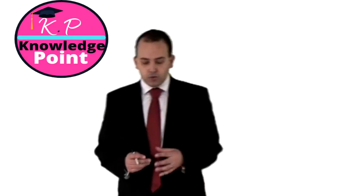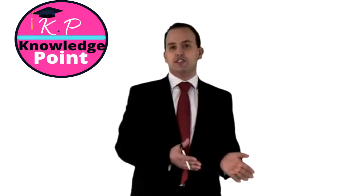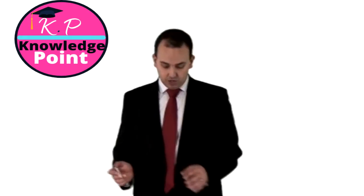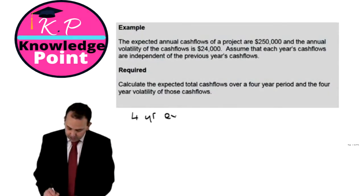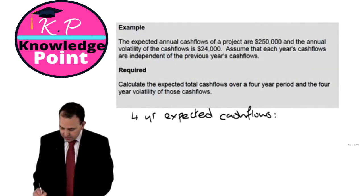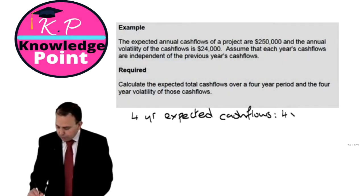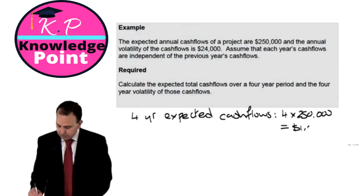First of all, if the annual cash flows are expected to be $250,000 each year and we're considering this over a four-year period, then the four-year expected cash flows will simply be four times $250,000, which is $1,000,000.